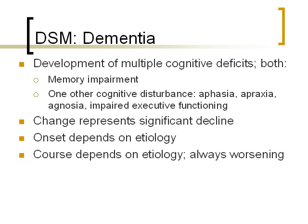The course also depends on etiology. It can be a slow continuous decline, or a stepwise decline — somebody drops a little, maintains, then drops again — which is typical of multi-infarct dementia, where multiple strokes each wipe out part of brain functioning. But it is typically always worsening. Without medication or intervention, people don't get better once they develop dementia.